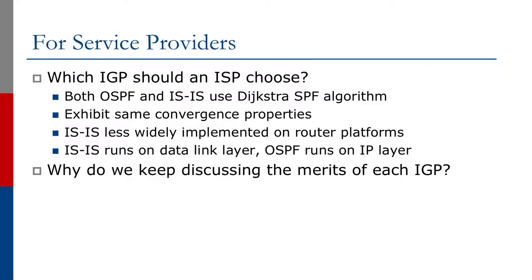Let's look at the decisions that service providers have to make. Which IGP should an ISP choose? Both OSPF and IS-IS use the Dijkstra SPF algorithm, and both exhibit the same convergence properties. IS-IS is less widely implemented on router platforms. IS-IS runs on the data link layer, while OSPF runs on the IP layer.